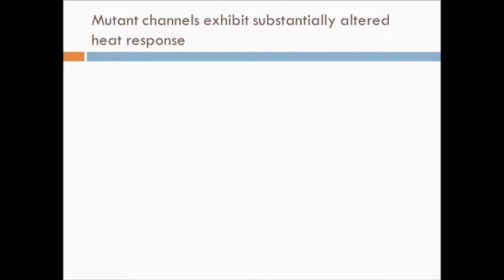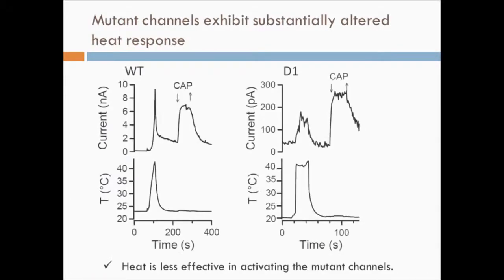However, turret mutant channels show significantly altered heat response. This can be seen in four different ways. First, heat is less effective in activating the mutant channels. Heating to the same temperature induced a much smaller current in the mutants compared to the wild-type.